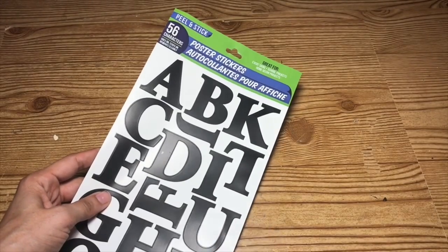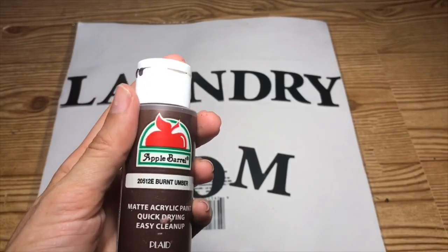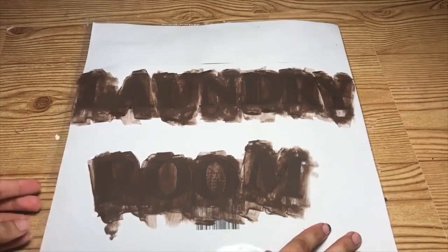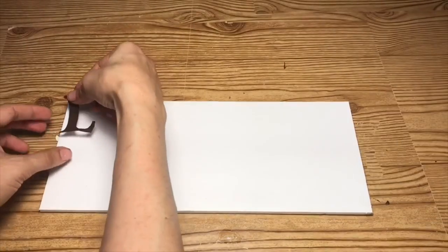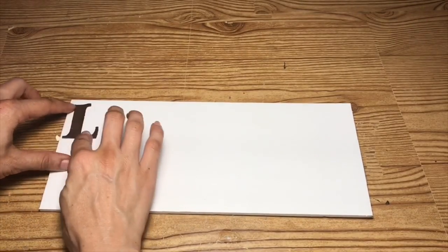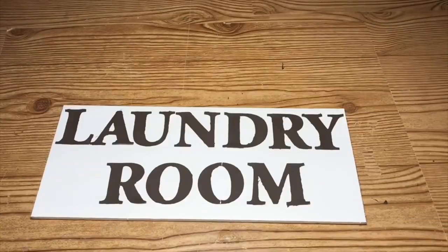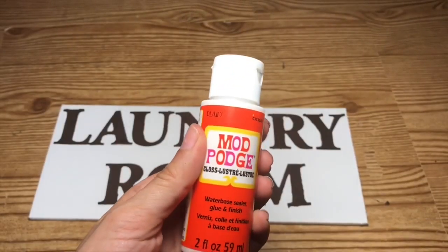I'm going to take these poster stickers and spell out laundry room and paint those in burnt umber. Once the stickers are fully dry, I'm going to spell out laundry room onto the foam board we just cut. Next, I'm going to seal it using this mod podge.